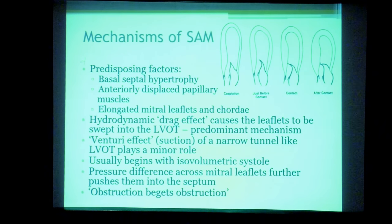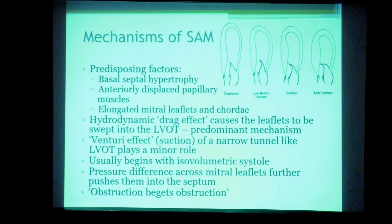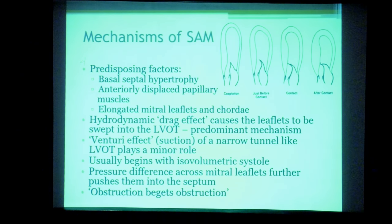SAM usually begins with the onset of isovolumetric systole. As the mitral leaflets move toward the septum, a pressure gradient develops across them — high pressure in the cavity and low pressure in the LVOT — further pushing the leaflets against the septum and prolonging the anterior movement. This is referred to as 'obstruction begets obstruction': once initiated, the mitral valve is kept pressed against the septum in a self-sustaining cycle throughout systole.